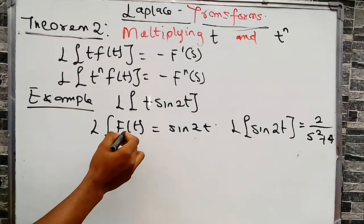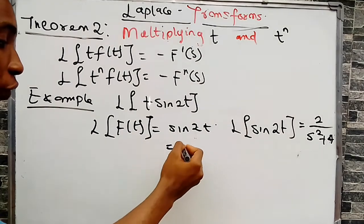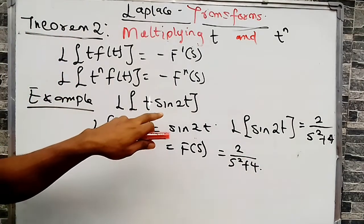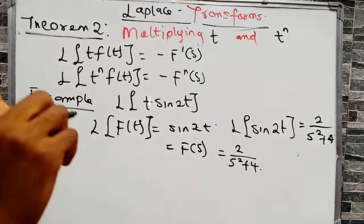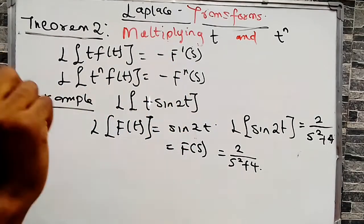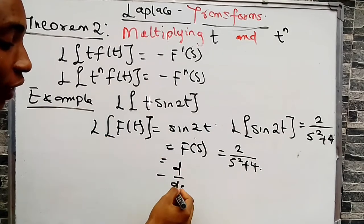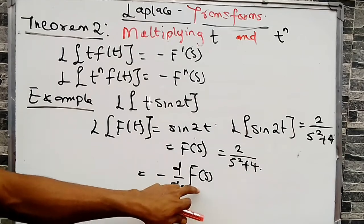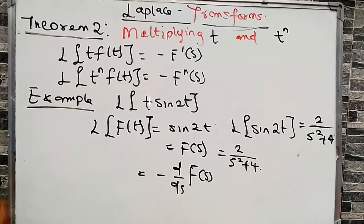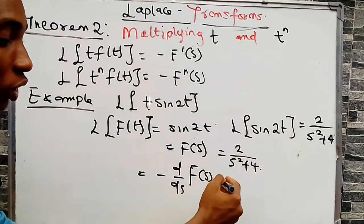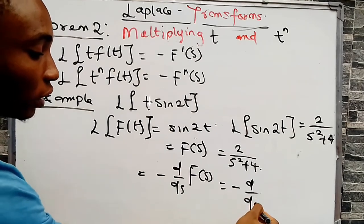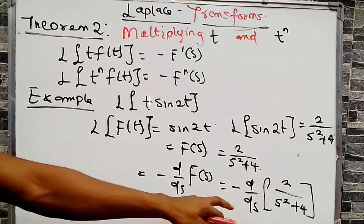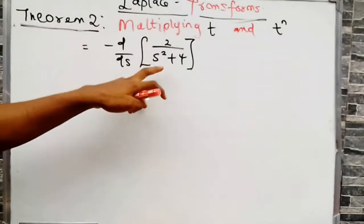Since the Laplace of f(t) = sin(2t) is F(s) = 2/(s²+4), and L{t·f(t)} = -F'(s), all we need to do is take the negative derivative of F(s) = 2/(s²+4). So the Laplace of t·sin(2t) equals minus d/ds of [2/(s²+4)]. We now differentiate 2/(s²+4) using the quotient rule.